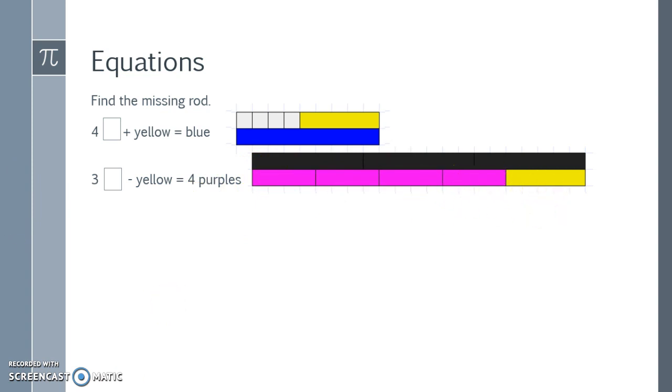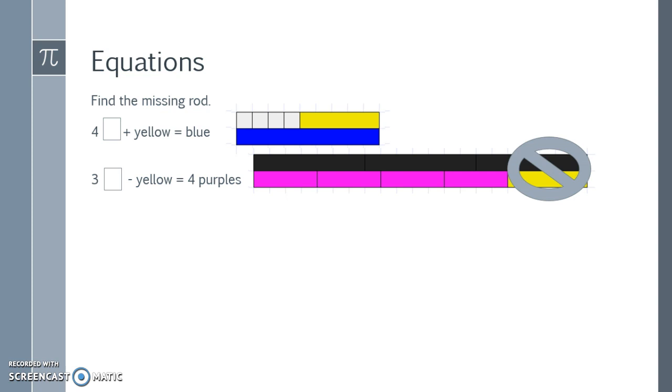And if I were to take away a yellow, I end up with four purples. So three blacks minus a yellow equals four purples.